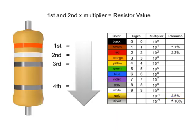In this example, the first band is orange, so the first digit is 3. The second band is white, so digit 2 is 9.